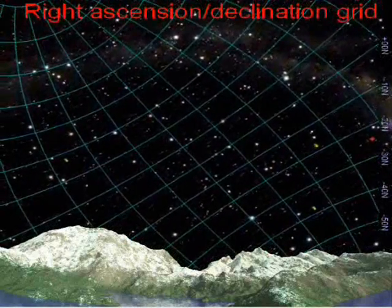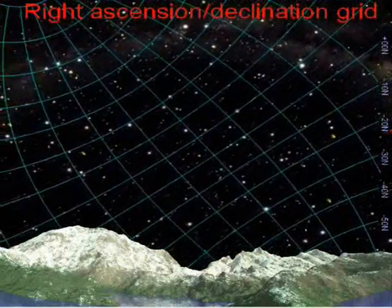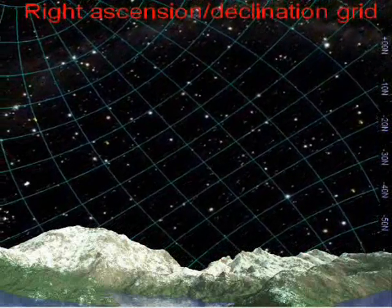If you are located at 90 degrees latitude, the north pole, you will never see any objects with a negative declination.